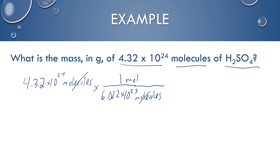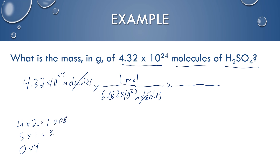I'm going to put all three steps together. To go from moles to grams I need the molar mass of H₂SO₄: two hydrogens at 1.008, one sulfur at 32.06, and four oxygens at 16. Adding all of that up gives 98.076 grams per mole.